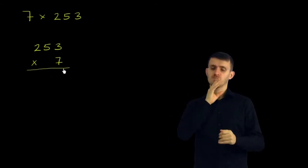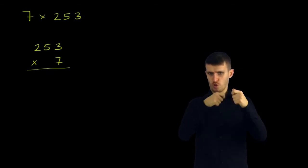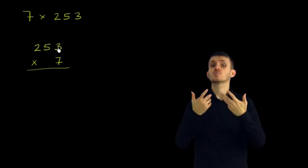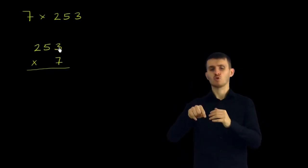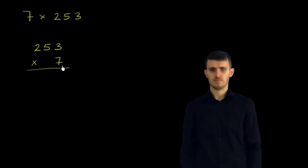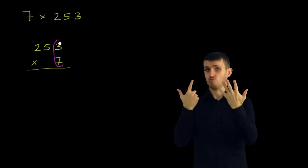And now we are ready to compute. And there are many ways of doing this, but this you could call the standard way. So what I do is I start with my 7, and I multiply it times each of the numbers up here, and I carry appropriately.